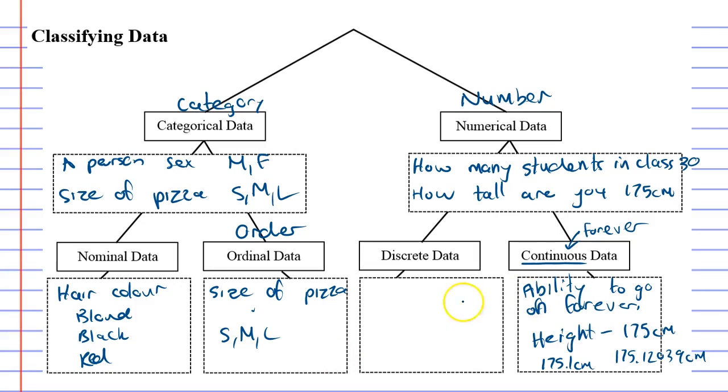Then we've got discrete data and a good example of that is how many students in class. When you do this it's always a whole number. For instance 30 kids. You don't have 30.5 kids in a class. You don't have 30.123 kids in a class. Therefore it's discrete data.